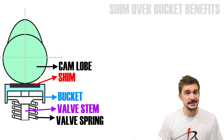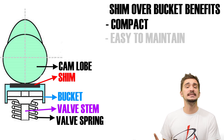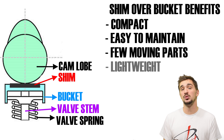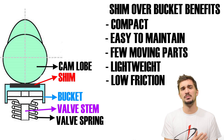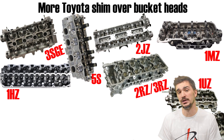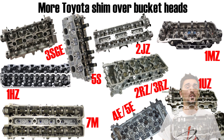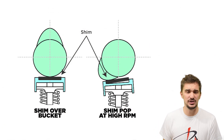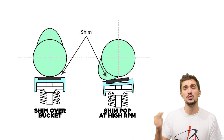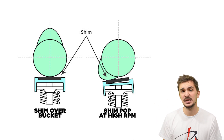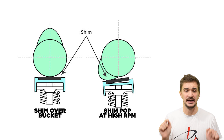The main benefits of the shim over bucket system are that it's compact, easy to maintain, and has very few moving parts, which means it's lightweight and doesn't produce a lot of friction. The shim over bucket system has been a staple of many Toyota engine designs over the years. But it does have some important disadvantages, especially when it comes to performance. Running very high-lift, high-duration camshafts on this valve train risks the cam lobe completely popping the shim off the bucket at high RPMs, which can potentially wreak havoc under your cam covers.